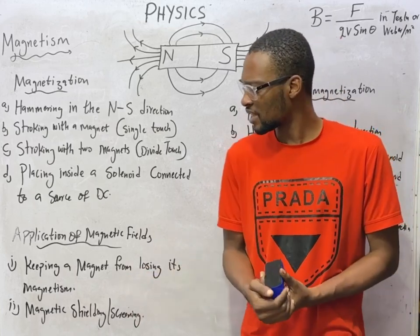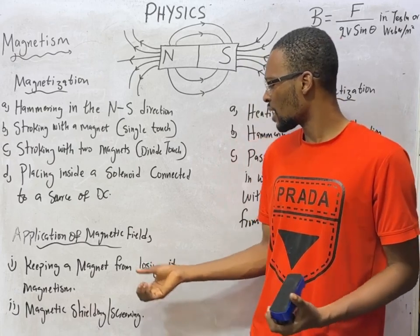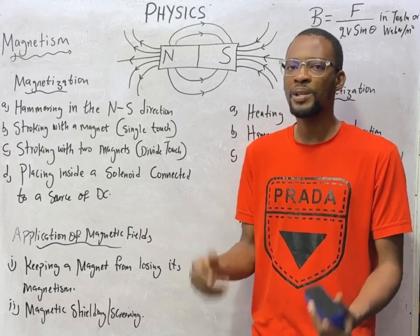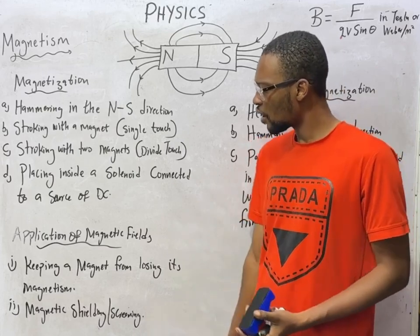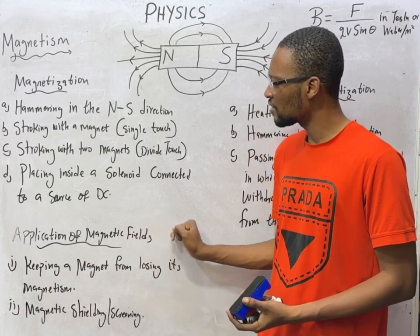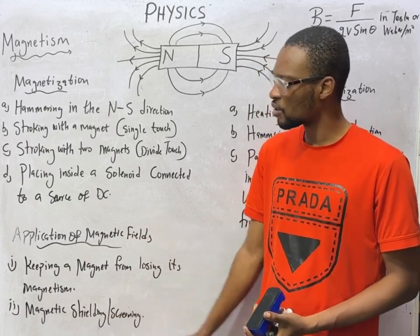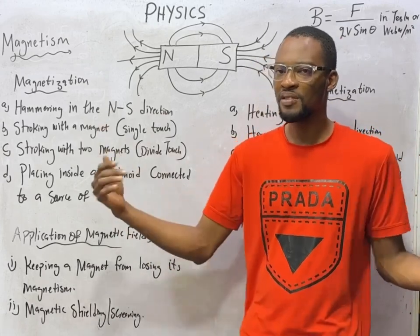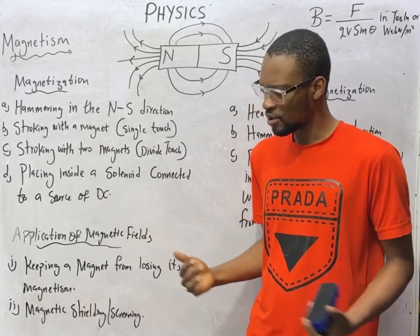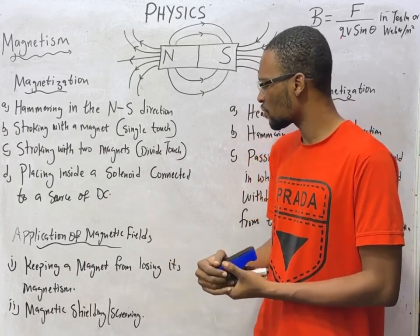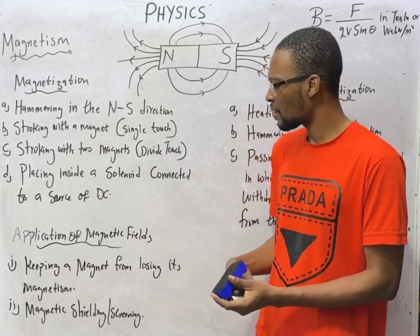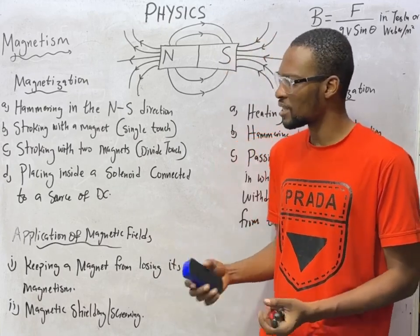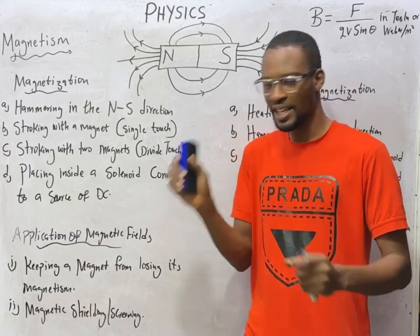The major applications of a magnetic field are: keeping a magnet from losing its magnetic field by storing it in a magnetic field, and magnetic shielding — also called screening — which prevents an object or material from being affected by magnetic force.